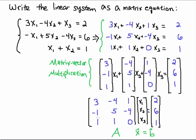Now notice that in every case I multiply 3, -1, 1—this first column—by x1. In every case I multiply -4, 5, 1, the middle column, the second column, by x2, and I multiply the third column by x3. And that's exactly what we did here.